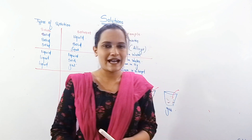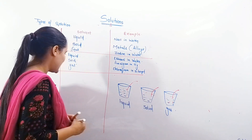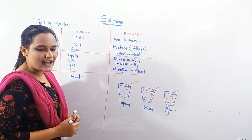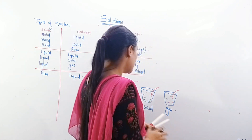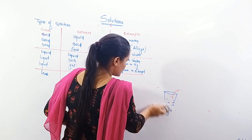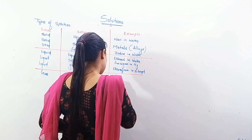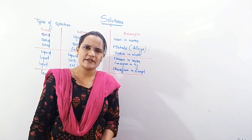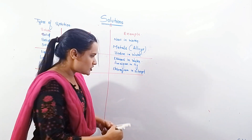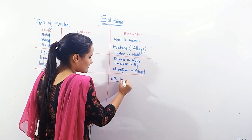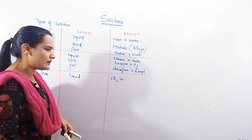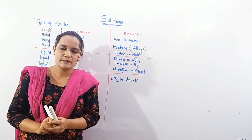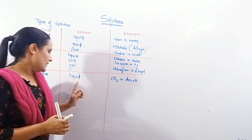Now we are going to see gas in liquid, gas in solid, and gas in gas. For gas in liquid: in cold drinks and carbonated beverages, you can see air bubbles. Carbon dioxide is dissolved in the liquid — so carbon dioxide in carbonated drinks is an example of gas in liquid.